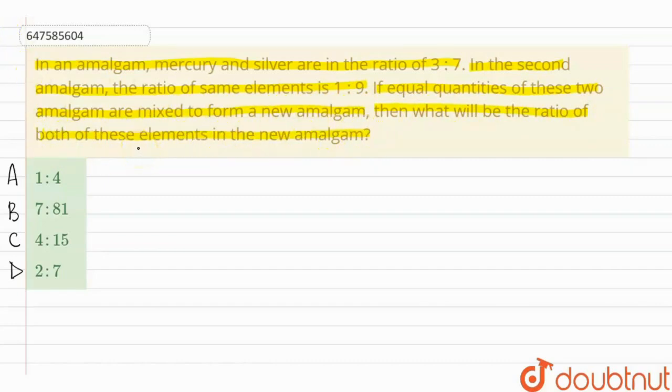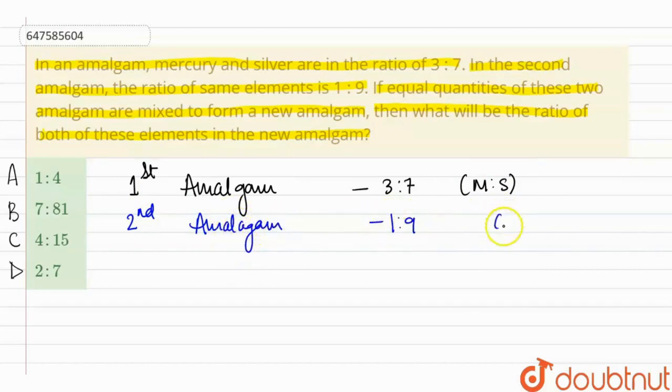So basically, mercury and silver are in two amalgams. We have ratios of two amalgams and we have mixed them and a new amalgam will be made. So we have to determine the ratio of mercury and silver. The first amalgam has the ratio of mercury 3:7, mercury and silver. And second amalgam has this ratio 1:9, mercury and silver.